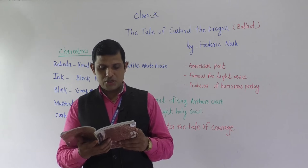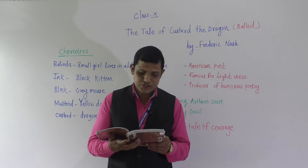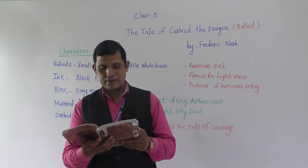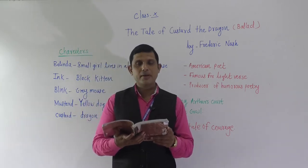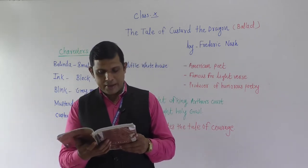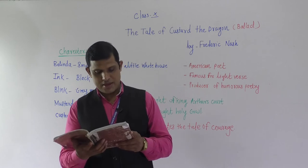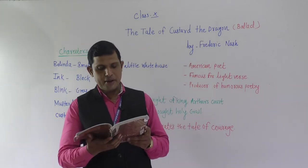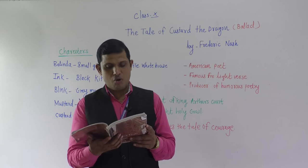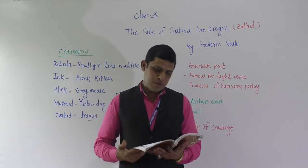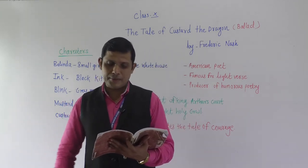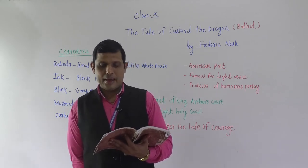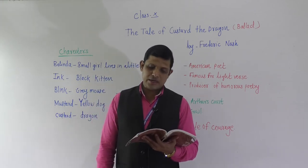Pistol in his left hand, pistol in his right, and he held in his teeth a cutlass bright. His beard was black, one leg was wood — it was clear that the pirate meant no good. Belinda paled and she cried 'Help! Help!' but Mustard fled with a terrified yelp. Ink trickled down to the bottom of the household, and little mouse Blink strategically fled. Up jumped Custard, snorting like an engine, clashed his tail like iron in a dungeon, with clatter and clank and a jangling squirm, he went at the pirate like a robin at a worm. The pirate gaped at Belinda's dragon and gulped some grog from his pocket flagon. He fired two bullets but they didn't hit, and Custard gobbled him, every bit.